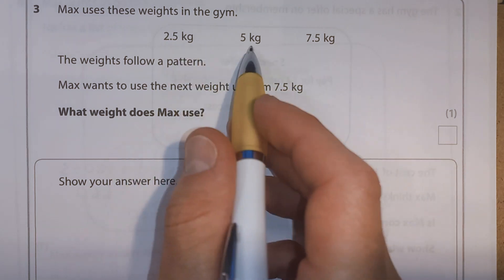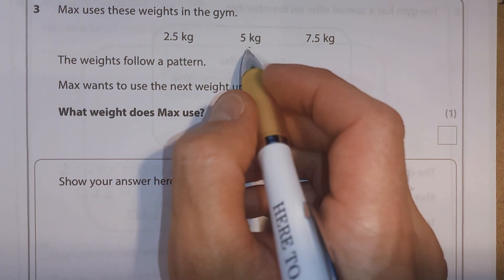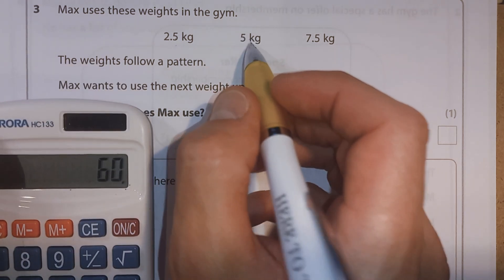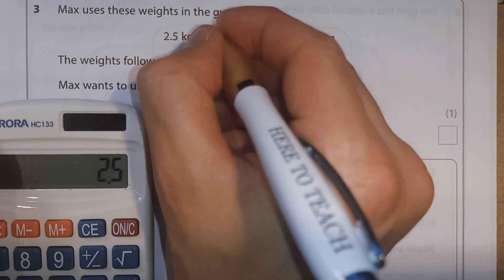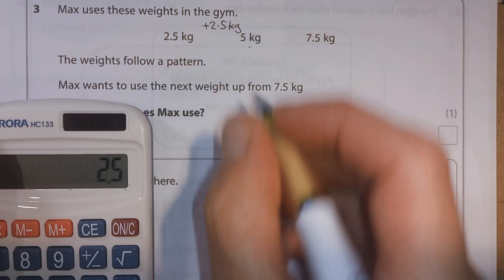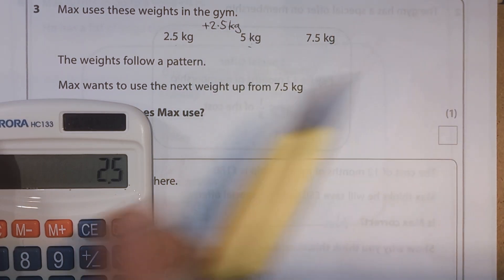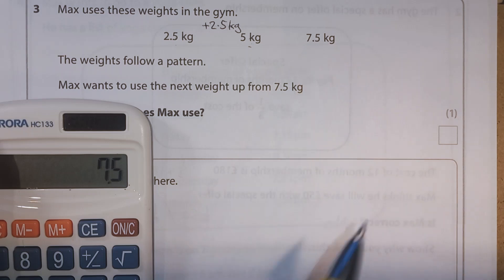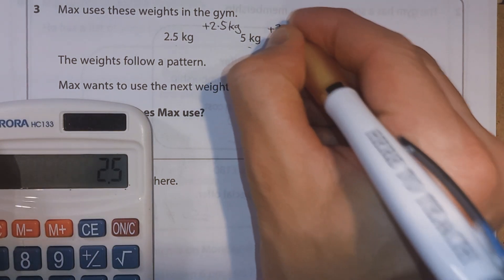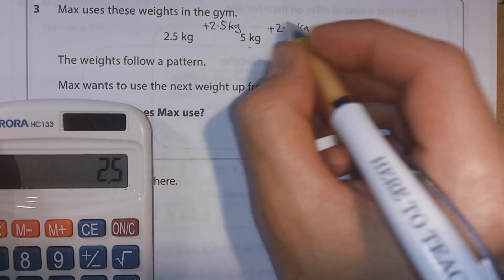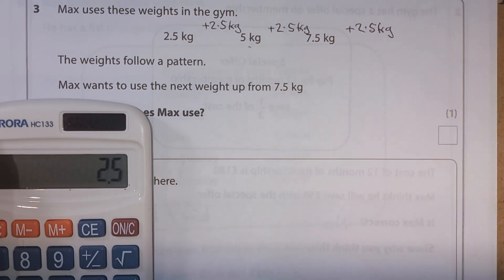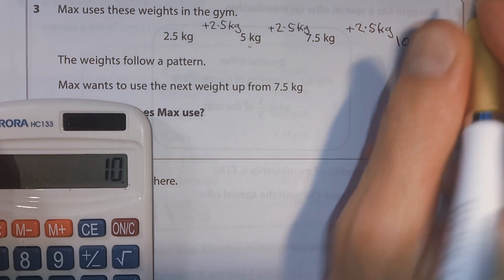So if we're looking at the pattern, we want to look at the difference between the numbers. So we're going to, if we look at the difference between these two, we're going to take the bigger number, 5 kilograms, and subtract the smaller number, 2.5. And we get a difference of 2.5. So let's look at the difference between these two numbers. So start with 7.5 because it's the bigger number, subtract 5. So this one, we're also adding on 2.5 kilograms. So if we want to know the next number, if we're using the same pattern, we're going to need to add another 2.5 kilograms. We've already got it in a calculator, so we can start with 2.5, add on 7.5, and we get 10 kilograms.